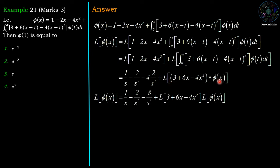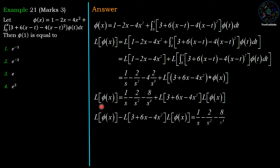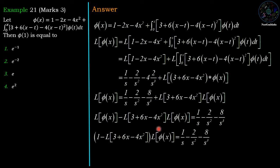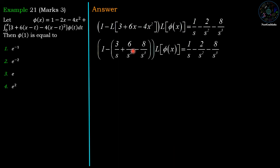Using the Laplace convolution property, Laplace of f*g = Laplace of f into Laplace of g, we get Laplace of (3 + 6x - 4x²) into Laplace of phi(x). Taking this term to the left-hand side, we have: (1 - Laplace of (3 + 6x - 4x²)) into Laplace of phi(x).